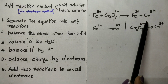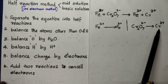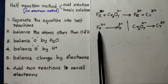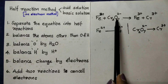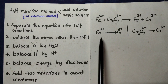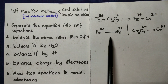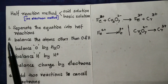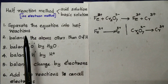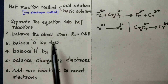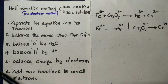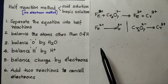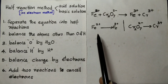Cr2O7 is converted into Cr3+. Cr3+ becomes one reaction, and the equation will be converted into two reactions. We will check the equation and balance the atoms.